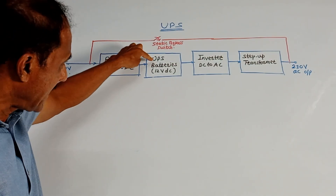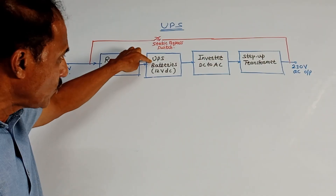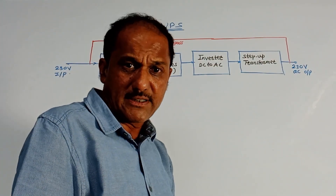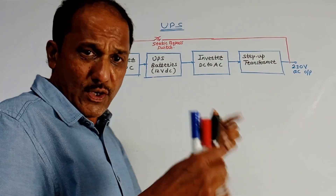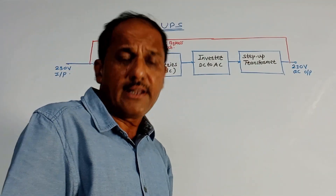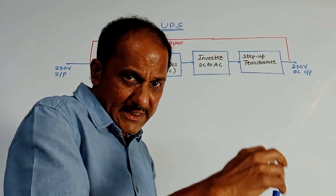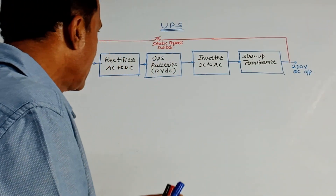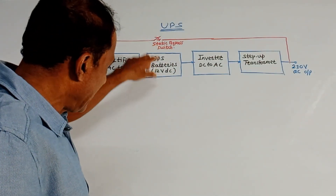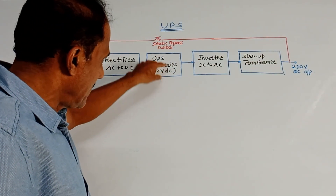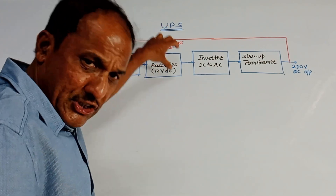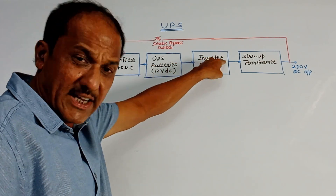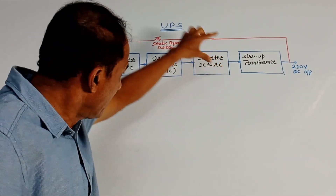The output of the rectifier is applied to the UPS batteries. A number of UPS batteries are used. Each battery is a 12 volt DC battery, and the batteries are connected in series — so it is called a string of batteries. The output of this string of batteries is applied to the inverter.